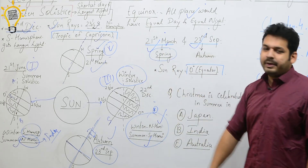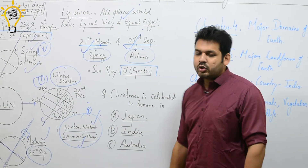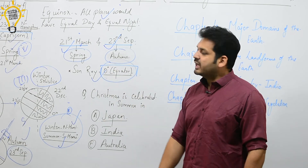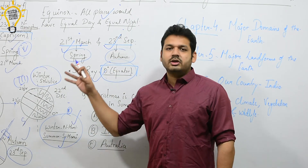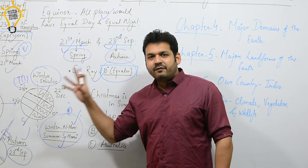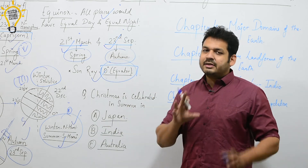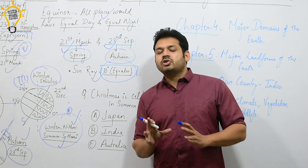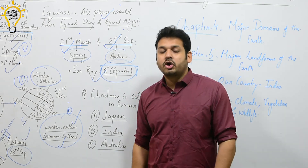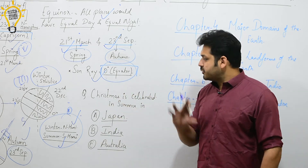21st March is the spring equinox and 23rd September is the autumn equinox. At both equinoxes, sun rays fall on the equator. So these are the 4 positions to remember: summer solstice — sun over Tropic of Cancer; winter solstice — sun over Tropic of Capricorn; spring and autumn equinox — sun over the equator.